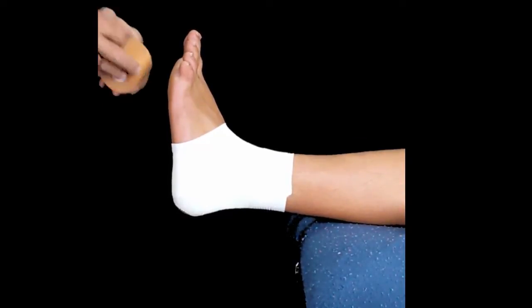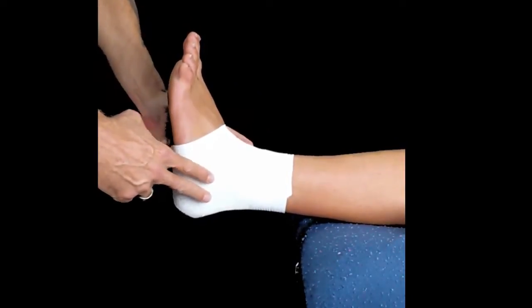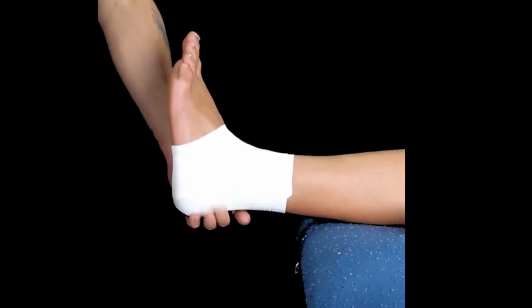Ankle taping with 50mm rigid tape. I'm going to carry on from the last demonstration, leaving the underwrap in place and taping over the top. I'm using a 50mm rigid adhesive tape.